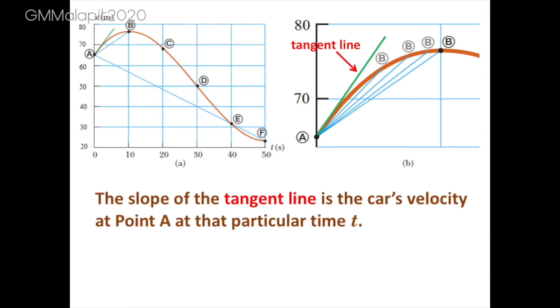The slope of this tangent line represents the car's velocity at point A. And from our method, we just determined the instantaneous velocity of the car at a particular time t.